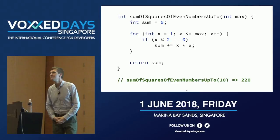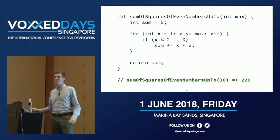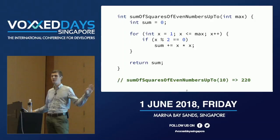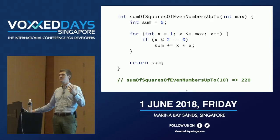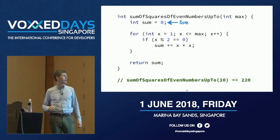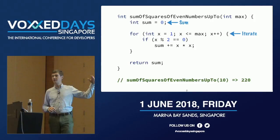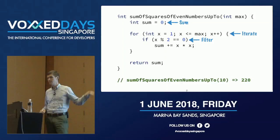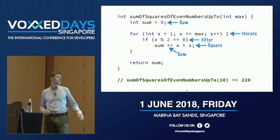For the next half, I'll try to convince you this code is no good. Let's enumerate the different responsibilities hiding in this trivial piece of code. We have a sum, an iteration, a filter, and a square — multiplication. In fact, the sum is torn apart across the code.